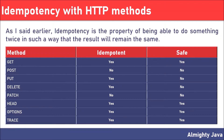If after the execution of an HTTP method there is a change when executing the method multiple times, then it is not idempotent. And if there is a change even the first time, then it is not safe. In the case of the POST method, every time it will return a different response, so it is not idempotent.